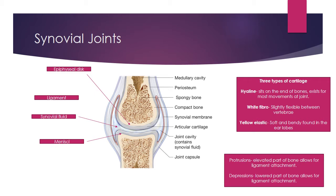Here we've got a diagram of a synovial joint, which could be any of our major joints where movement occurs, labelled with all the key elements you need to be aware of. Starting at the bottom, we've got the joint capsule — the outer layer that keeps everything in place and compact, ensuring the synovial fluid and membrane don't spill out. The joint cavity refers to the space between the joints. Articular cartilage is the main cartilage where movement occurs, responsible for shock absorption and stopping our bones from grinding against each other.